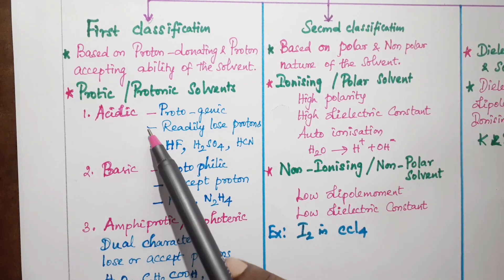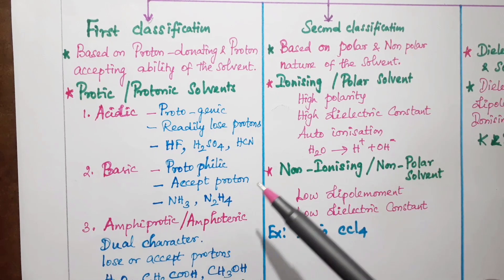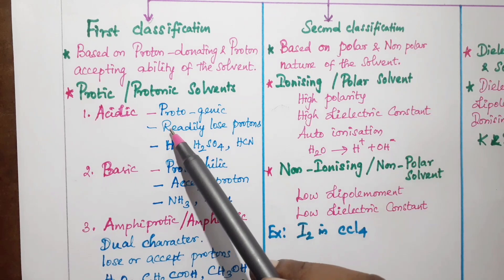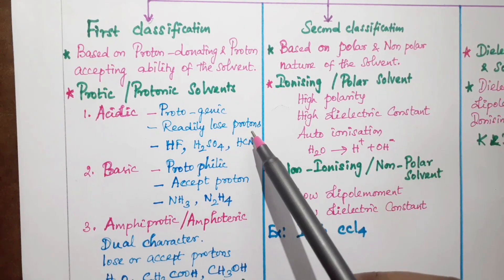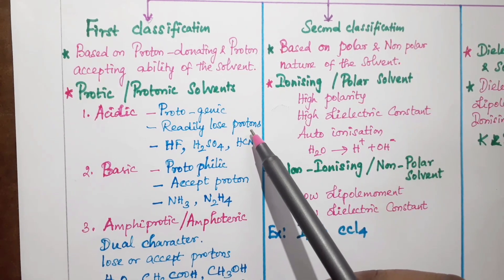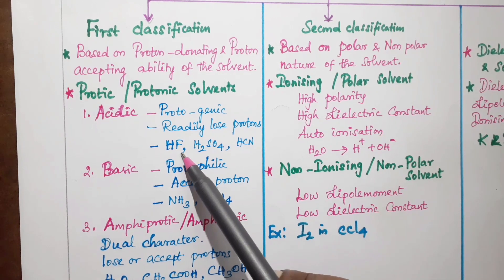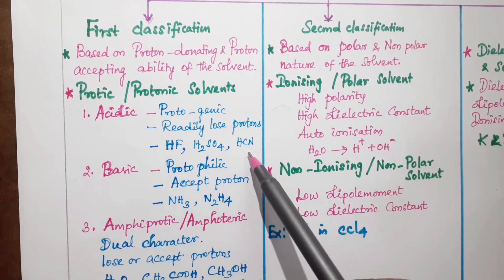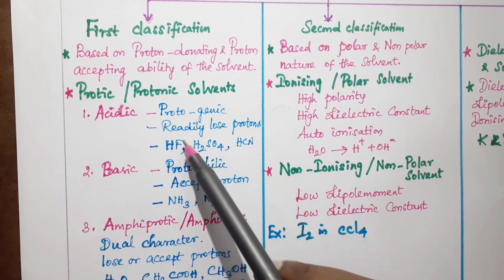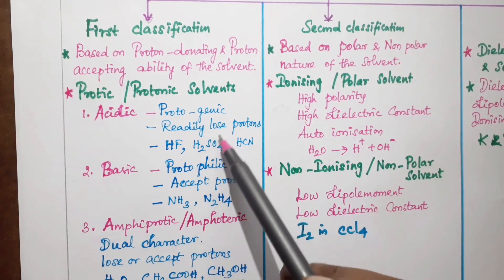Under the third classification, acidic solvents readily lose protons — protons are easier to lose. Examples of acidic solvents include hydrogen fluoride (HF), sulfuric acid (H₂SO₄), and hydrogen cyanide (HCN). These are acidic type solvents.